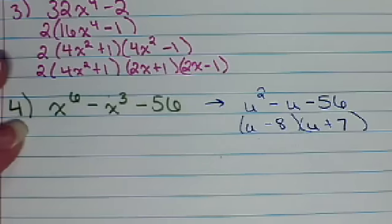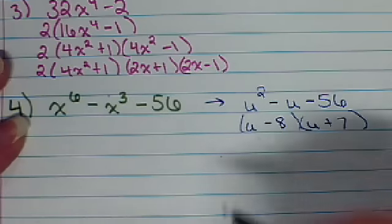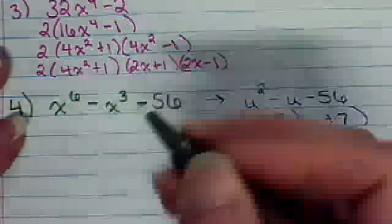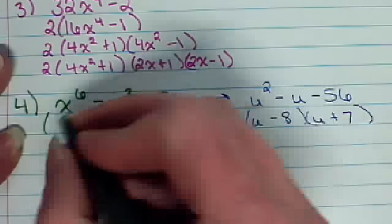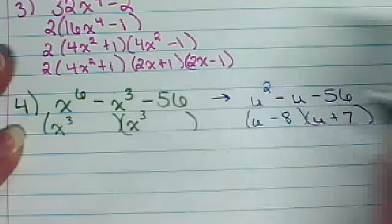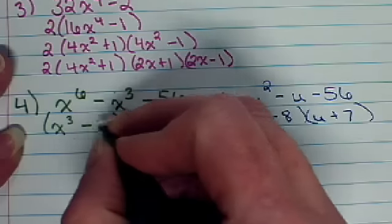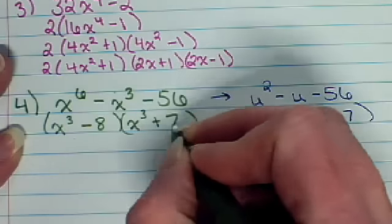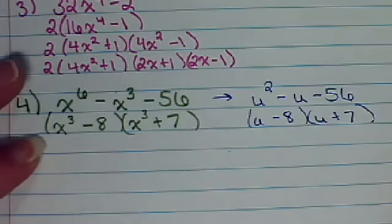Well, that's exactly how this is going to factor. But instead of u, it's going to be that x cubed. x cubed times x cubed gives me x to the sixth. This is going to have to be a negative 8 and a positive 7.